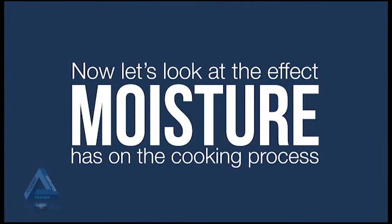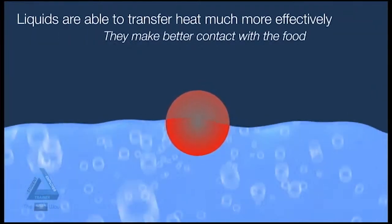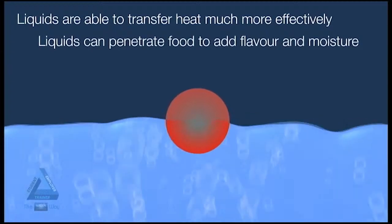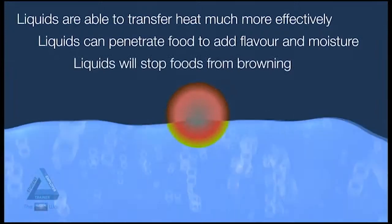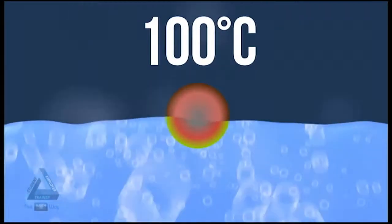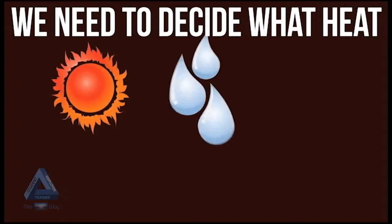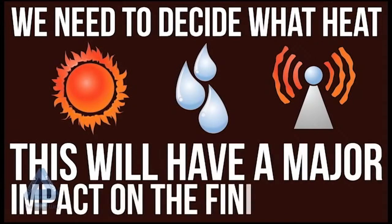Now let's look at the effect that moisture has on the cooking process. Liquids transfer heat much more effectively than air because they make better contact with the food. Liquids can penetrate into the food and add flavour and moisture, but will impair your ability to brown food. Water has a maximum temperature of 100 degrees Celsius — hotter than that and it turns to steam. So when we cook, we need to decide if it will be more suitable to use dry heat, wet heat, or some other kind of heat such as microwaves.